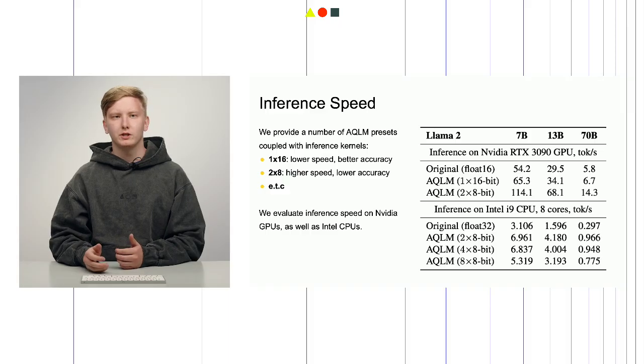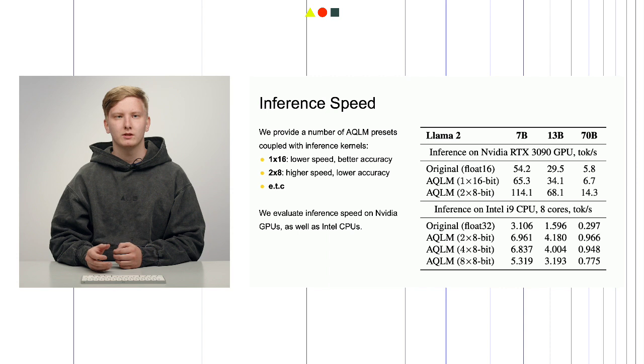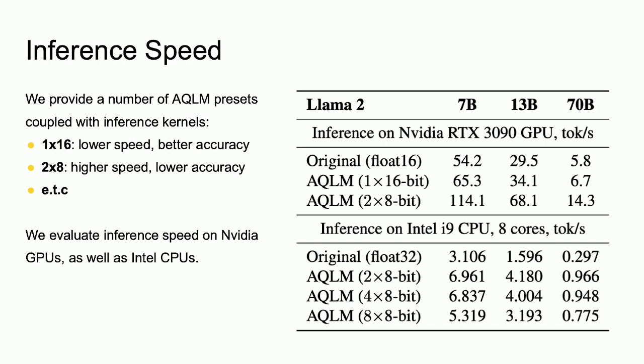One other benefit of quantization is computation speedup. Since main GPU operations are memory-transfer bound, a decrease in model size is entailed by faster processing times. We implemented efficient inference kernels for a number of AQLM setups and evaluated their performance on LLaMA text generation, obtaining the results you can see in the table. AQLM shows as much as 2.5x speedup compared to the FP16 baseline.